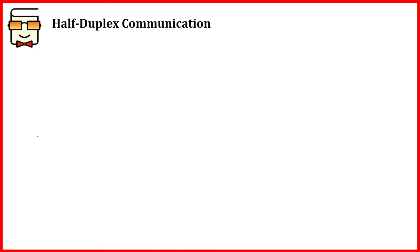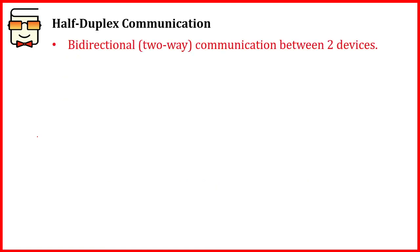Now coming to half duplex communication, which is the second kind of communication. Half duplex means there are two parties, A and B, and the communication between them is two-way — both A and B can send and receive data. But at one time, only one of them will be sending and the other will be receiving, and at another time, the other person can send or receive.